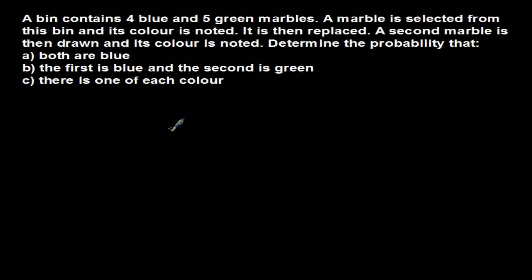We need to determine the probability that: Part A, both are blue; Part B, the first is blue and then the second one is green; and Part C, there is one of each color.